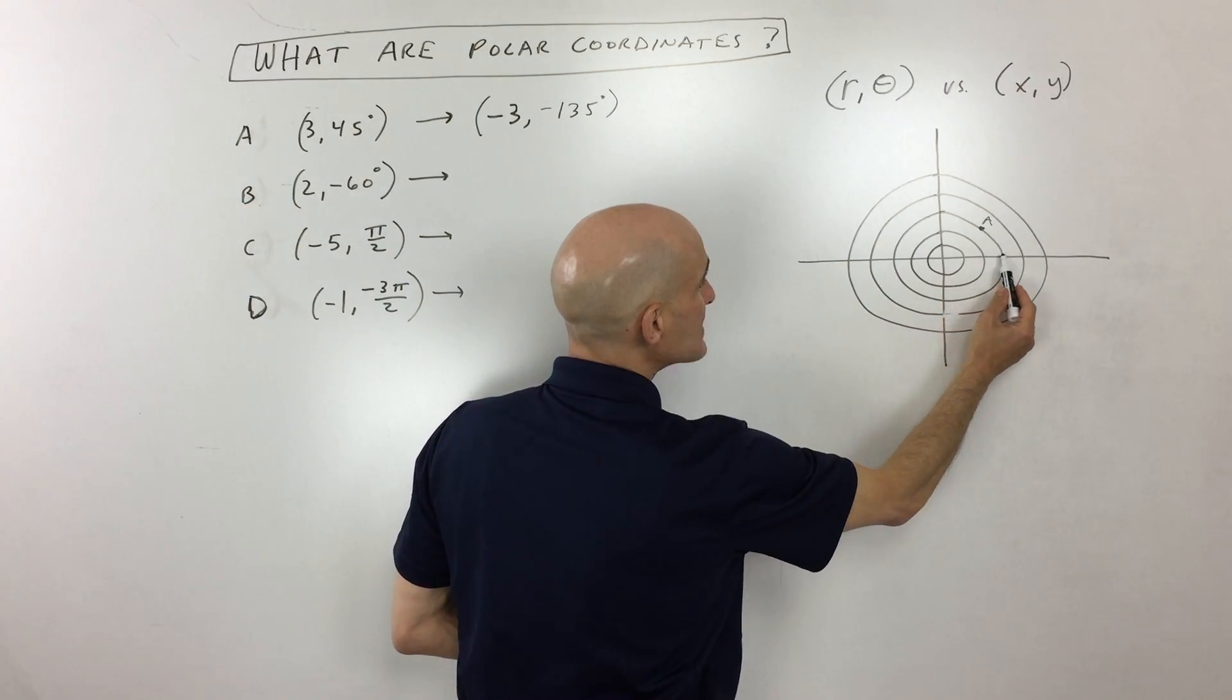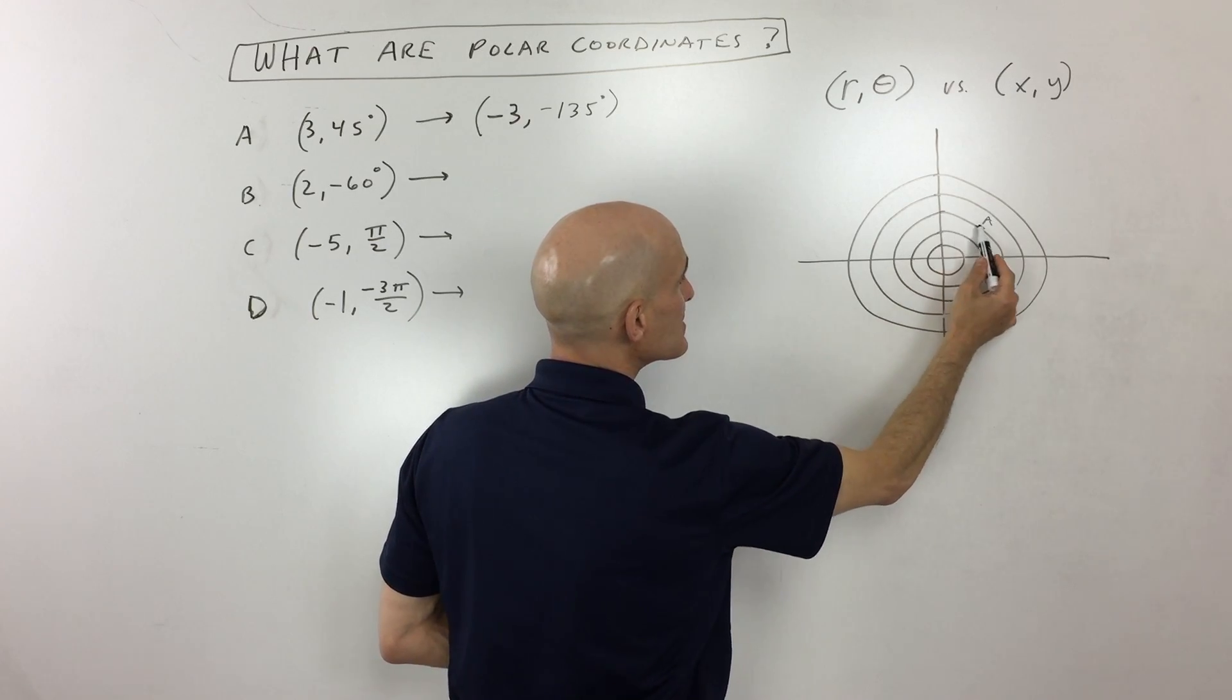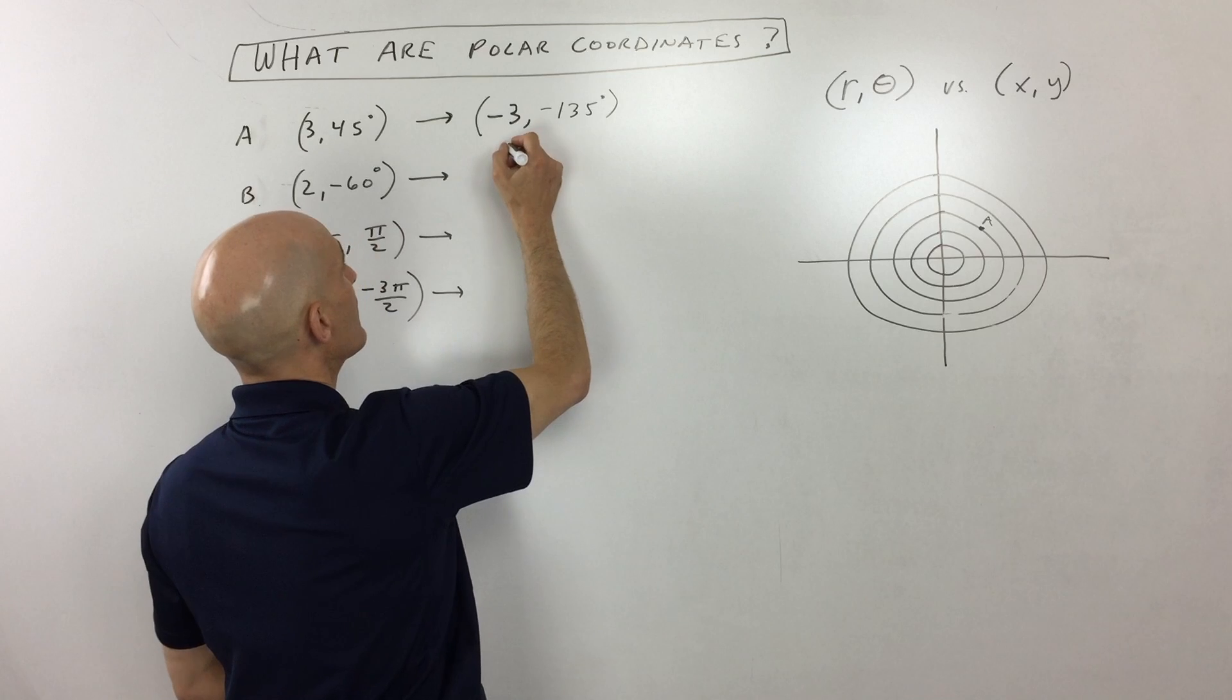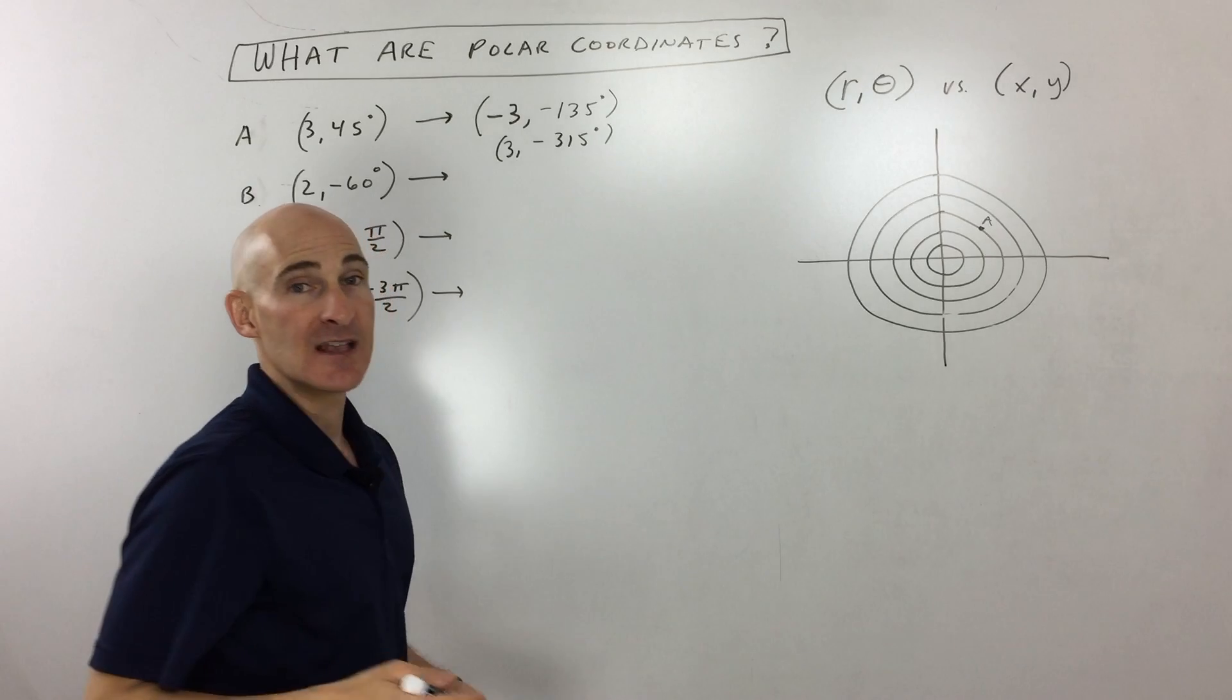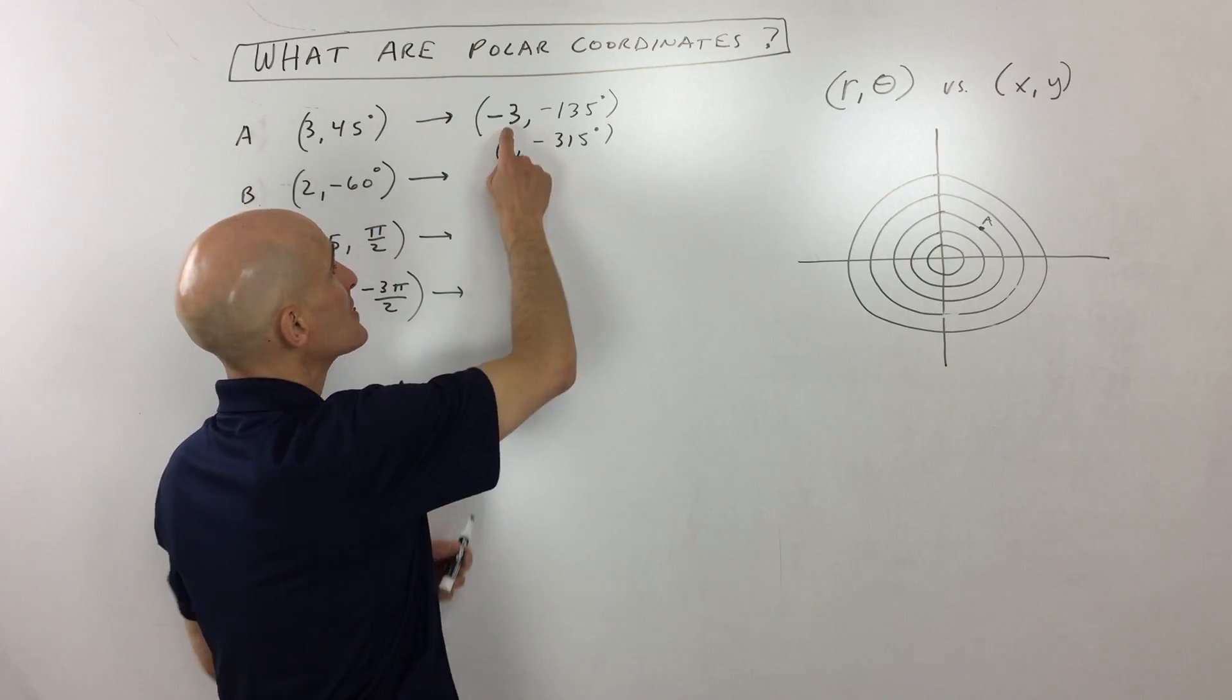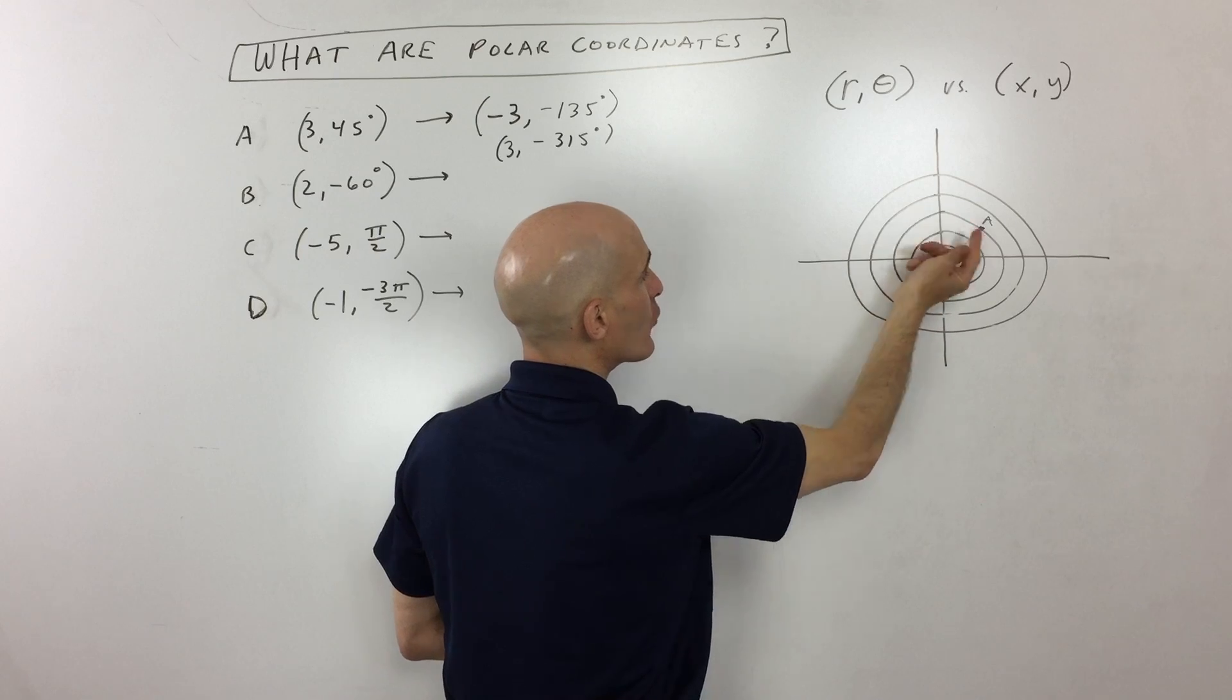We could also go positive three and then rotate like this. So how much would that be? Three, comma, negative 315, and so on. But what I like to do when it's a negative radius is I like to go first left and then rotate from there.